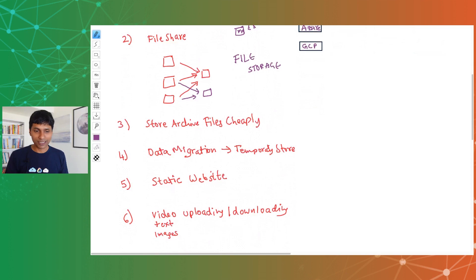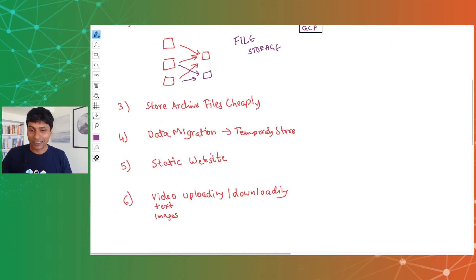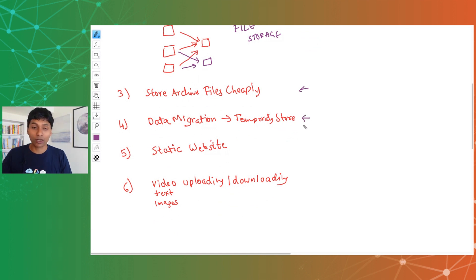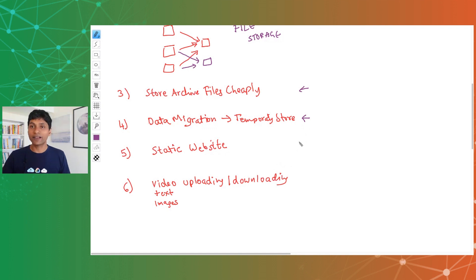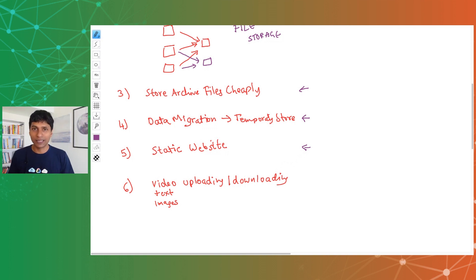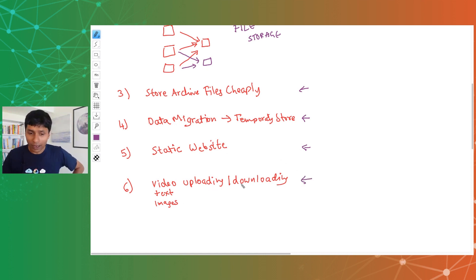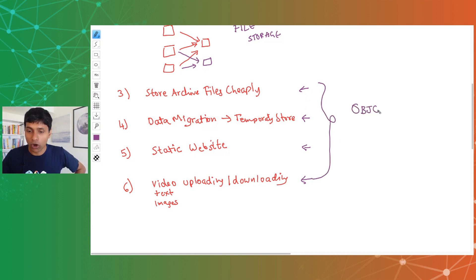If you want to store archive files very cheaply, have a temporary store for data migration files — whether a zip file, a database archive, or a data analytics archive — or create a static website with HTML, image, and CSS files, or support video and file uploading and downloading for users — for all these use cases, the type of storage recommended is called object storage.